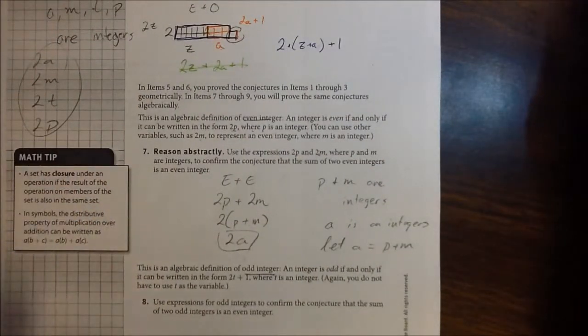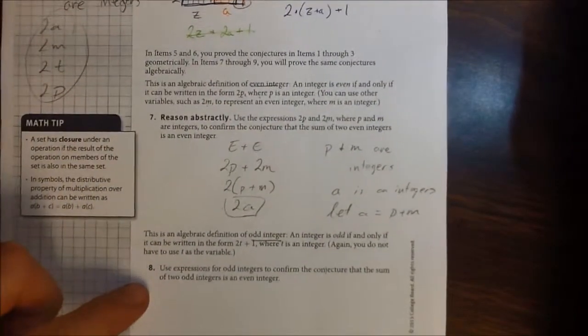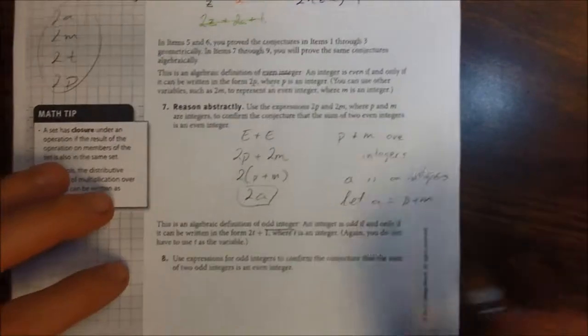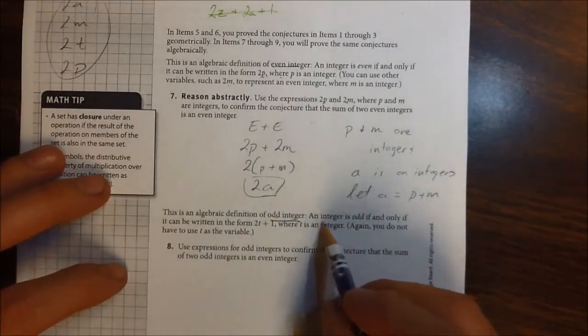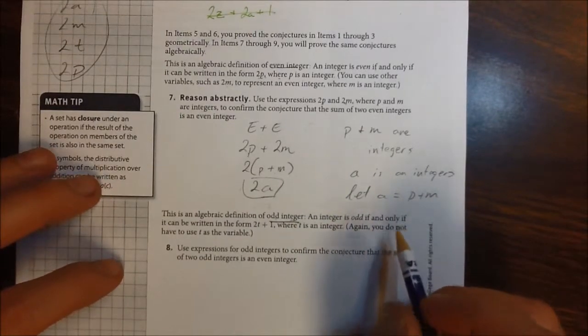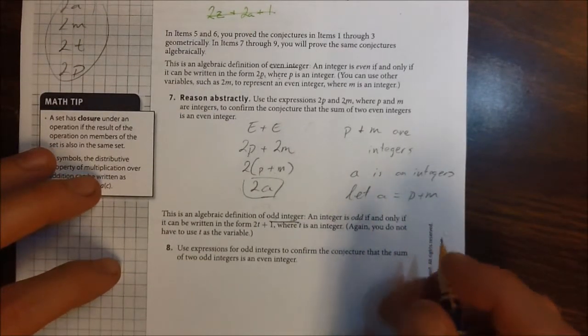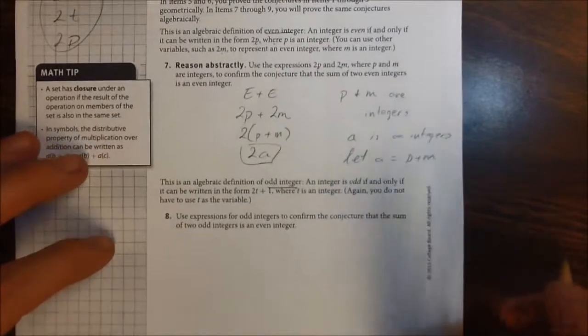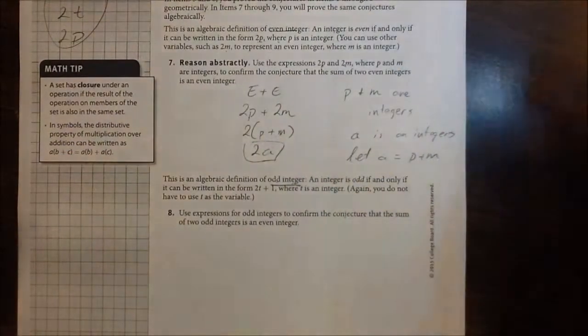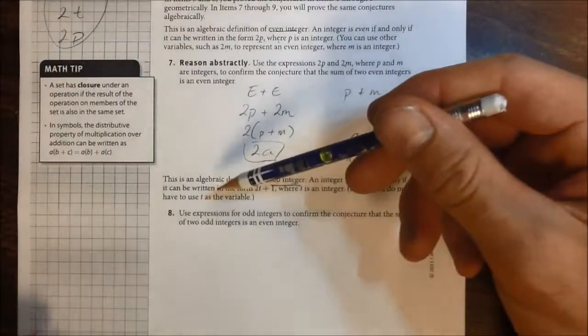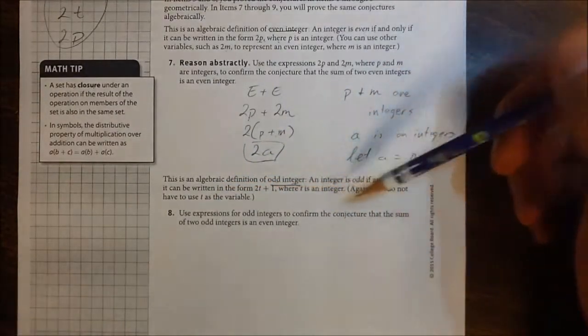Alright, so let's move on and let's talk about the odd integers. It says this is an algebraic definition of odd integer. That integer is odd if and only if it can be written in the form 2t plus 1. Again, that should ring some bells. There's some similarities going on here, right? So, it says it can be written in the form 2t plus 1 where t is an integer.